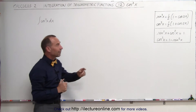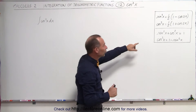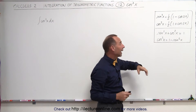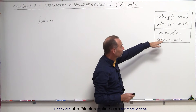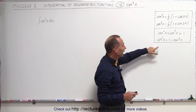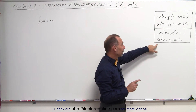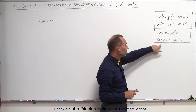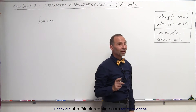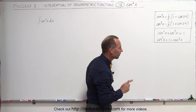Notice I've added some additional identities here that may come in handy. The sine square of x plus the cosine square of x equals 1, and therefore we can write the cosine square of x equals 1 minus the sine square of x.